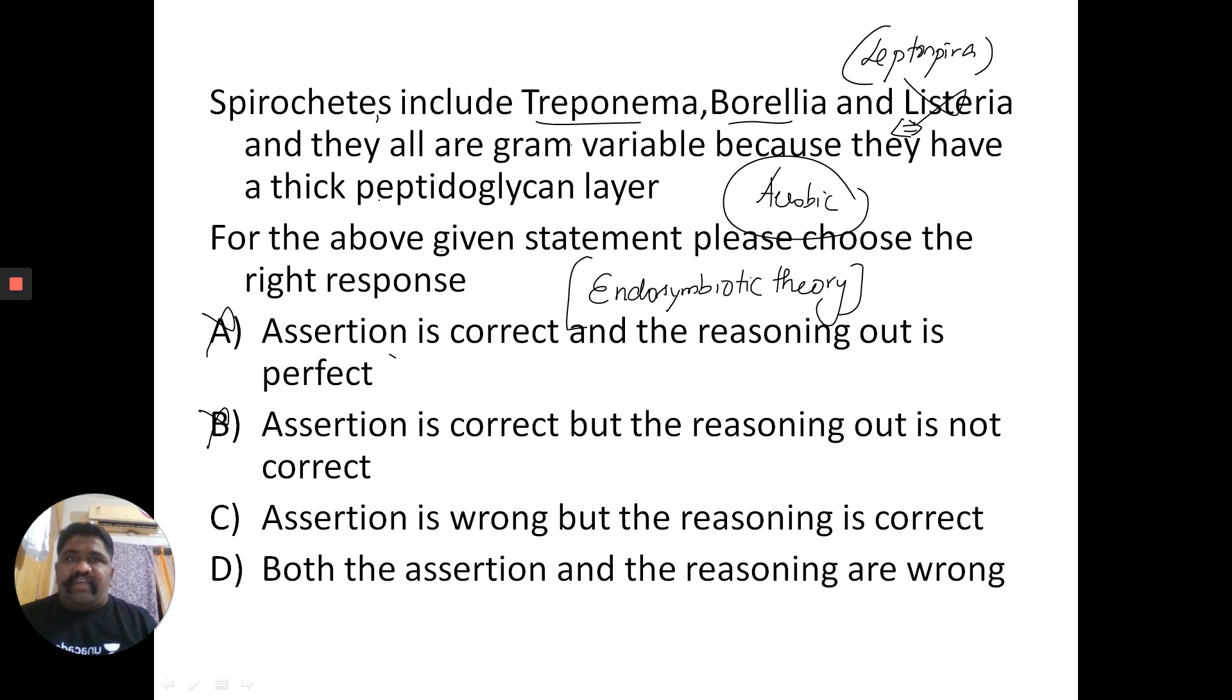No, they do not have a thick peptidoglycan layer because they are not gram positive organisms and they are not having a very well built outer membrane just like a gram negative organism. They are variable kind of structures and they don't have a proper kind of cell wall and cell membrane as it is boasted by gram positive and gram negative.